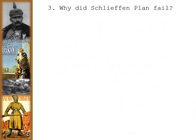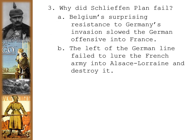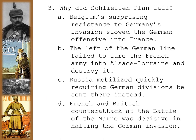Why did the Schlieffen Plan fail? Belgium's surprising resistance slowed the German offensive into France. The left of the German line failed to lure the French army into Alsace and Lorraine to destroy it. Russia mobilized more quickly, requiring German divisions to be sent to the Eastern Front. And Great Britain coming to the aid of France helped stop the advance. French and British counterattacks at the Battle of the Marne were decisive in halting the German invasion.